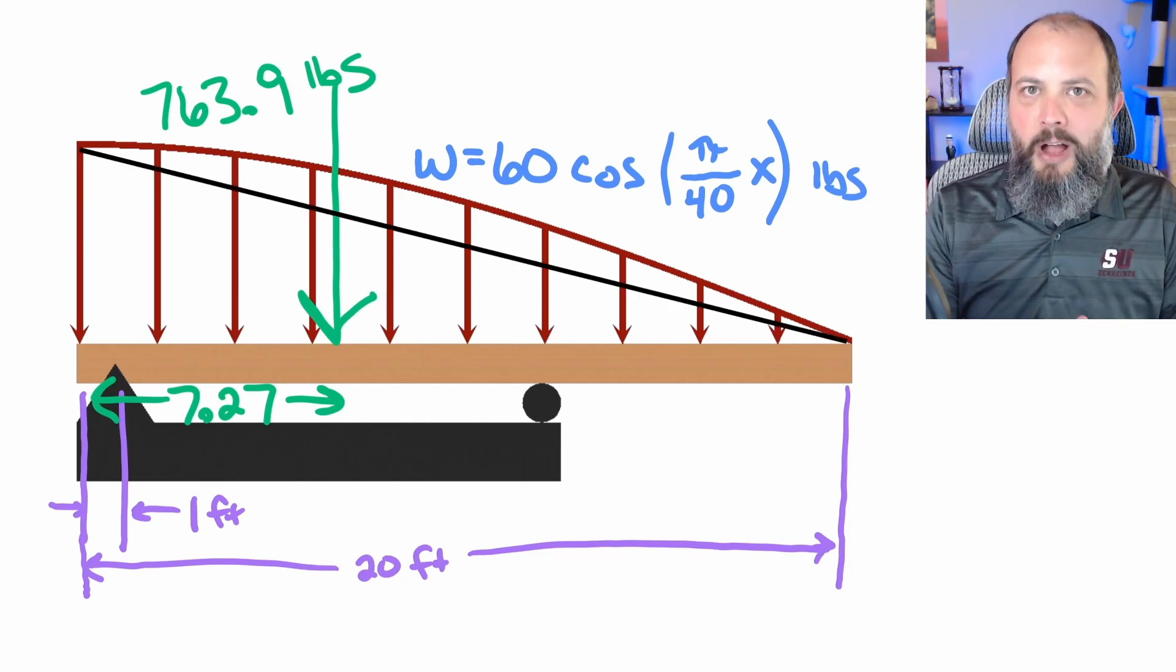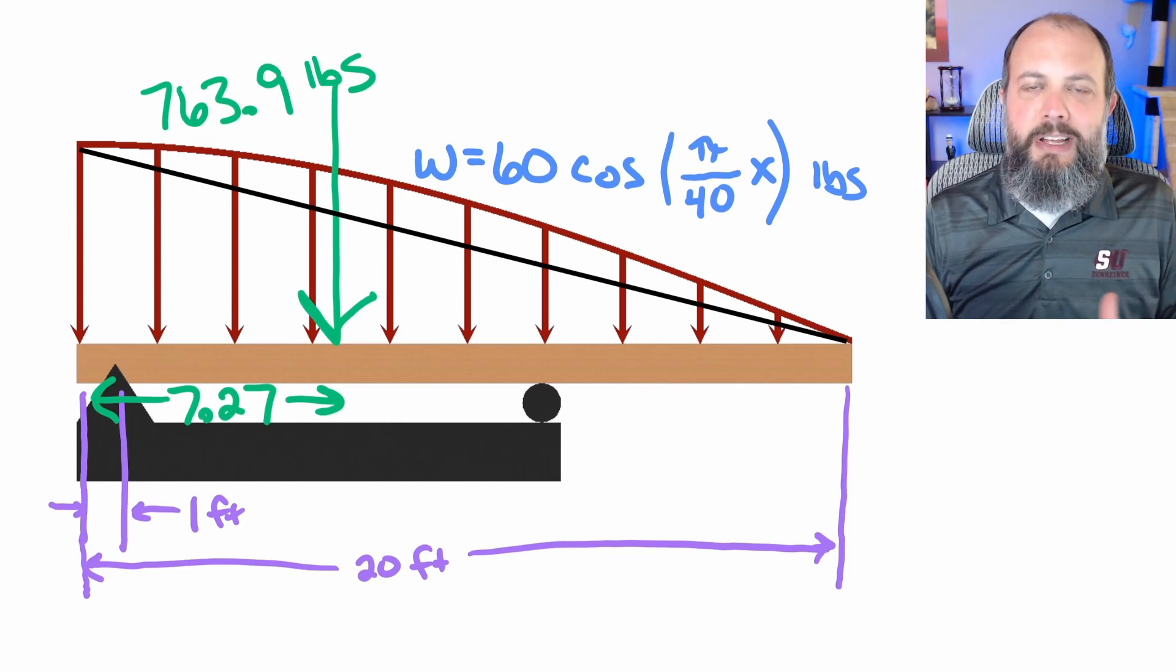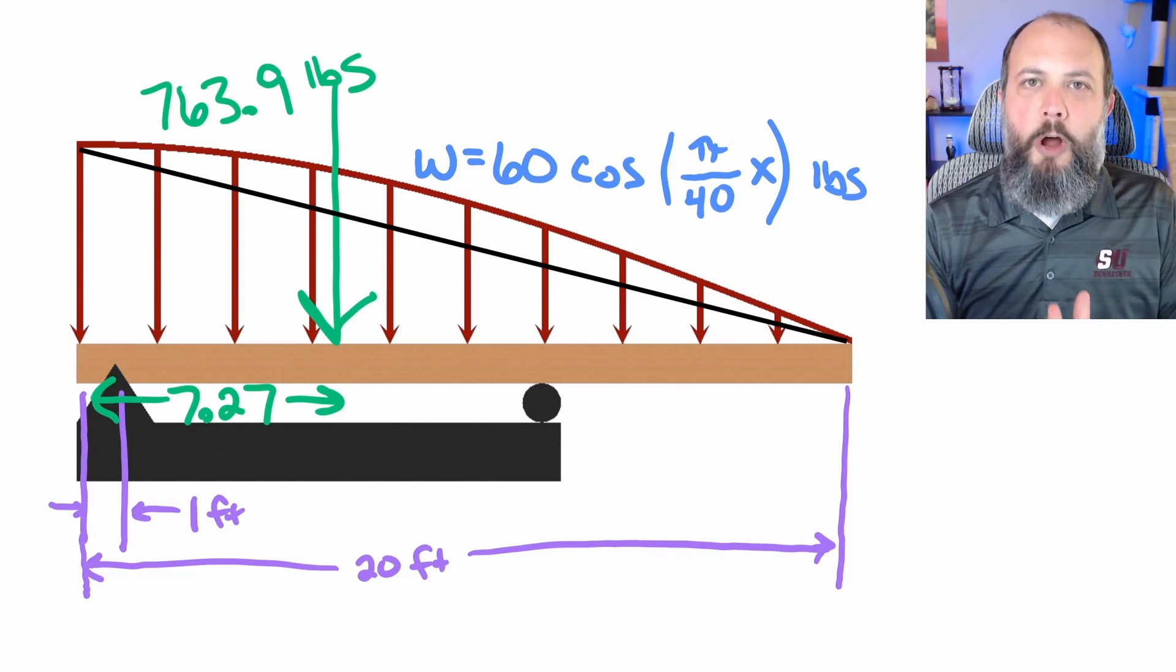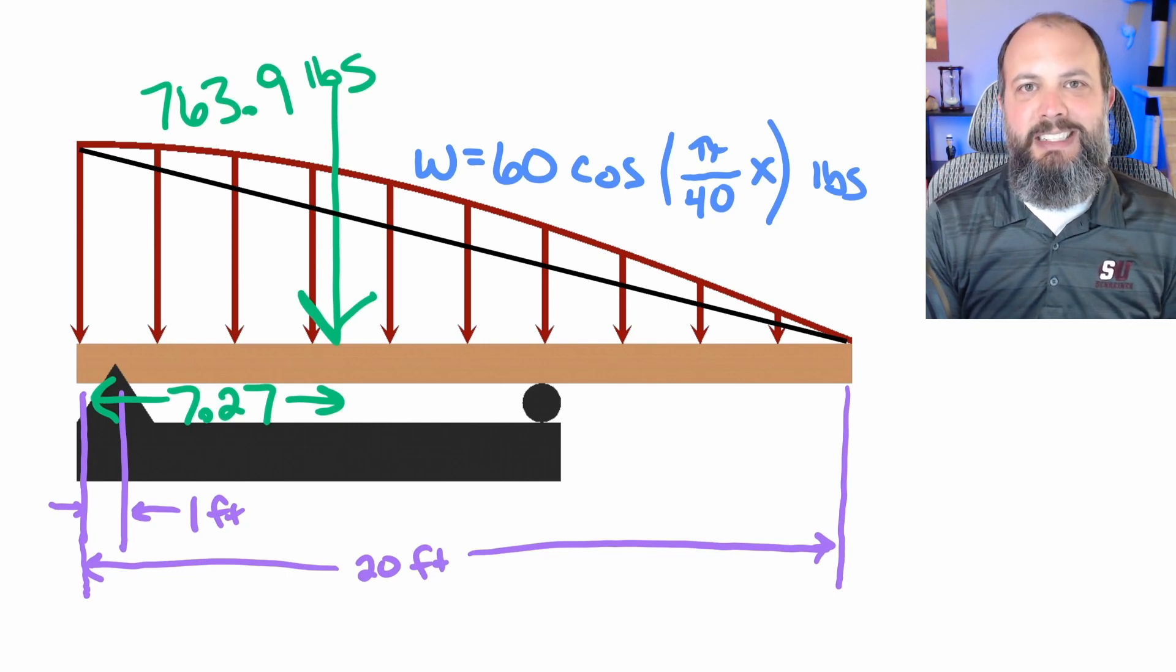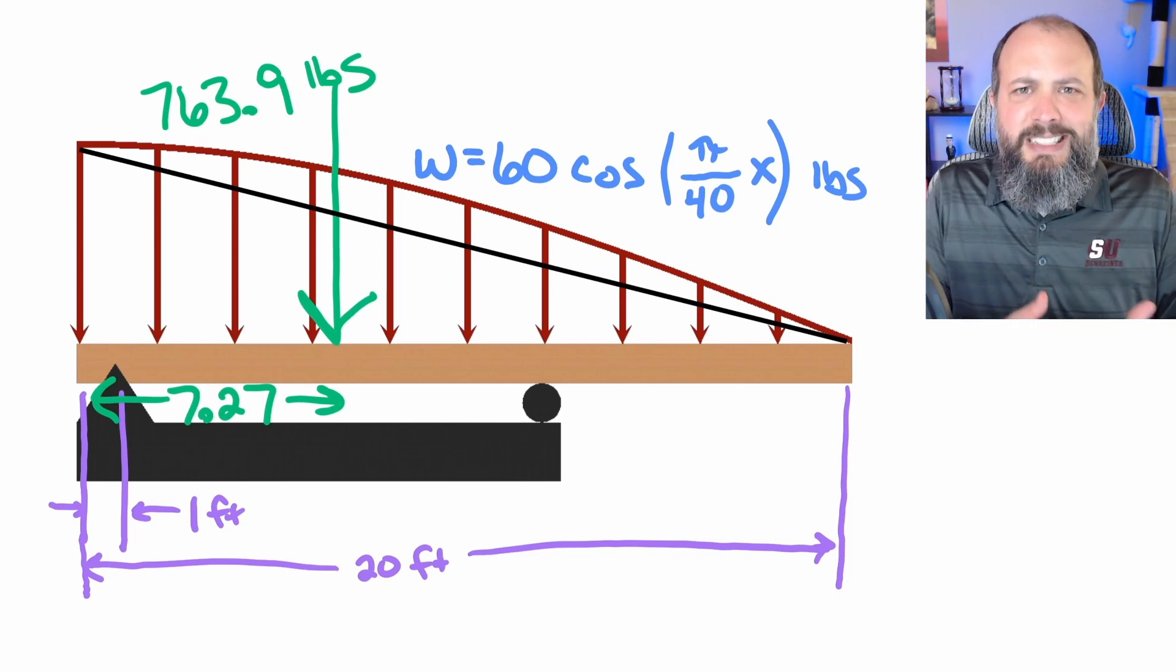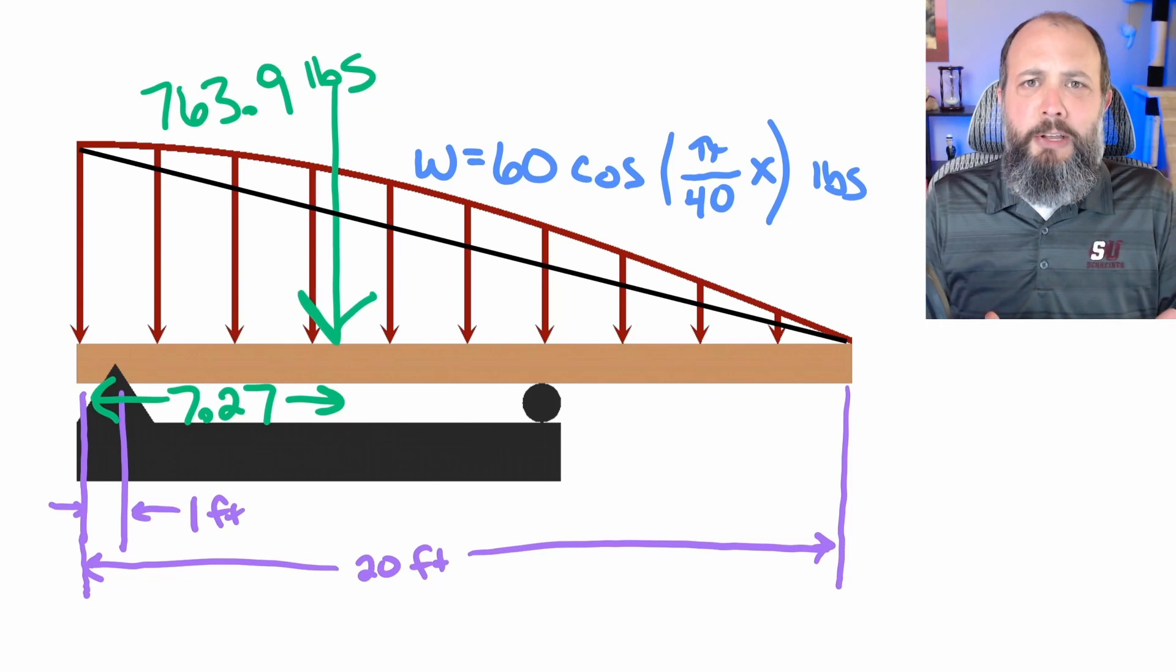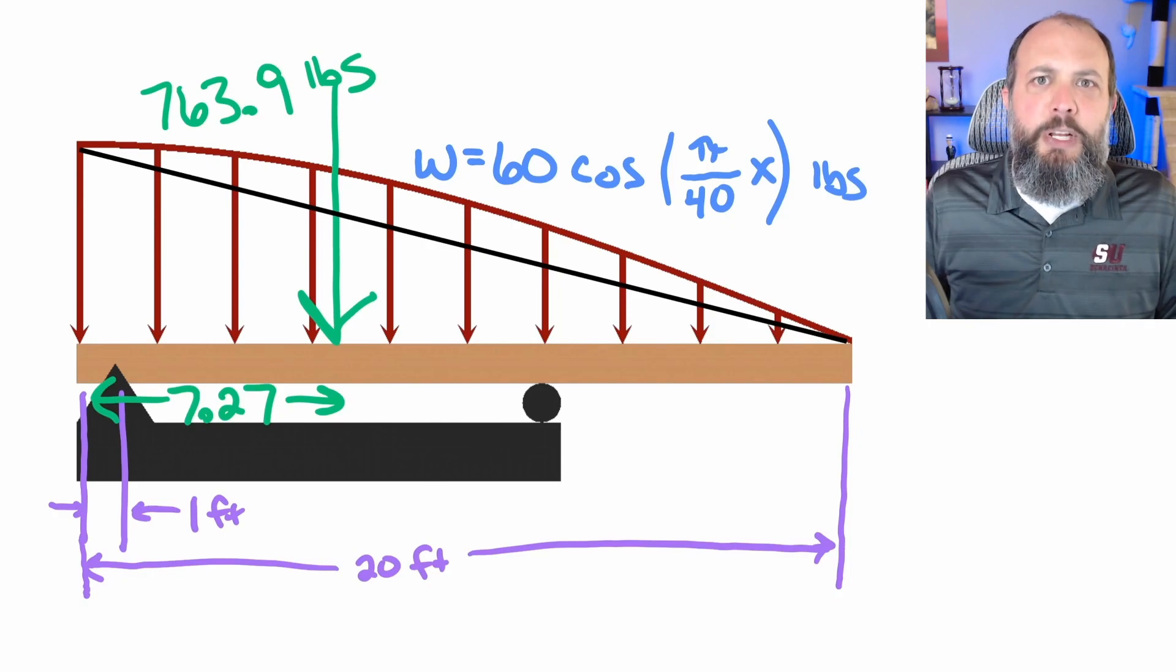So if this shape were actually a triangle, like the straight line that I drew here, then its centroid would be one third of the distance. So one third of 20 would be 6.67 meters. And since this shape does seem to be pretty close to the shape of a triangle, it does make sense that you get a value sort of close to that. So the 7.27 seems reasonable.